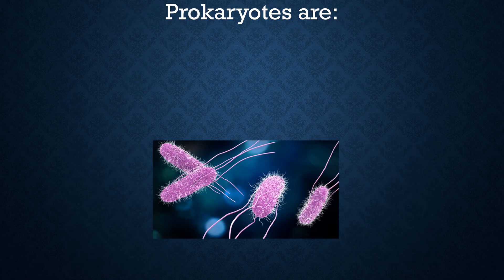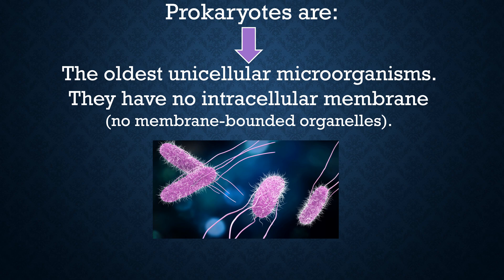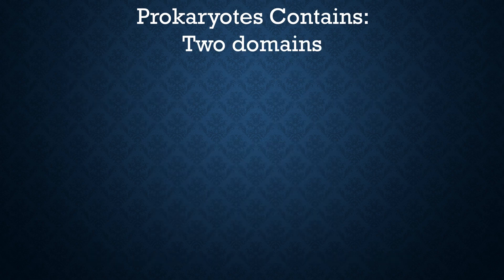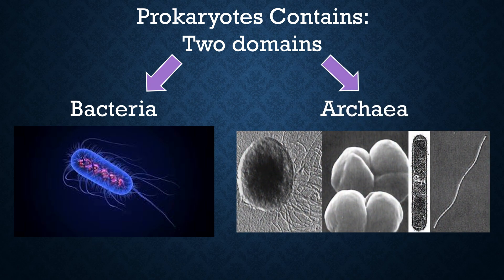Prokaryotes are the oldest unicellular microorganisms. They have no intracellular membrane, meaning they have no membrane-bounded organelles. Prokaryotes are found in all environments. The prokaryote cells contain two domains: the first is Bacteria and the second is Archaea.